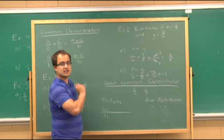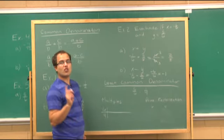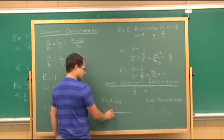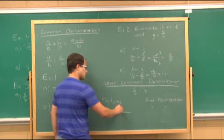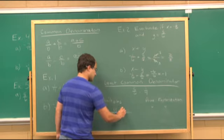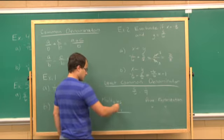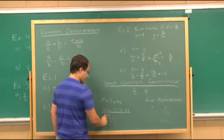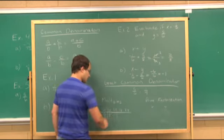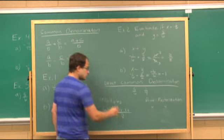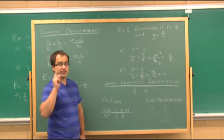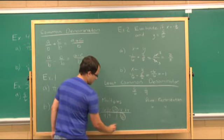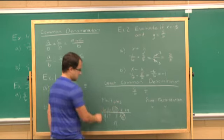What you do is you list as many multiples as you need until you find one they have in common. Six times one is six, six times two is twelve, six times three is eighteen, six times four is twenty-four. Four times one is four, four times two is eight, four times three is twelve. As soon as you find one they have in common, you want the smallest one — that's your LCD. So twelve is our LCD between six and four.